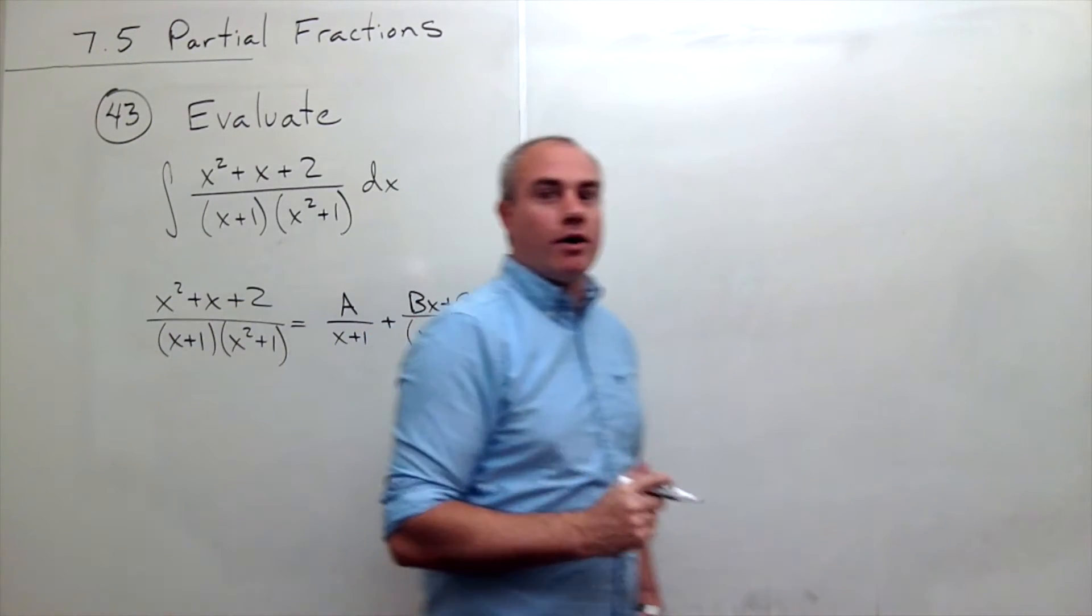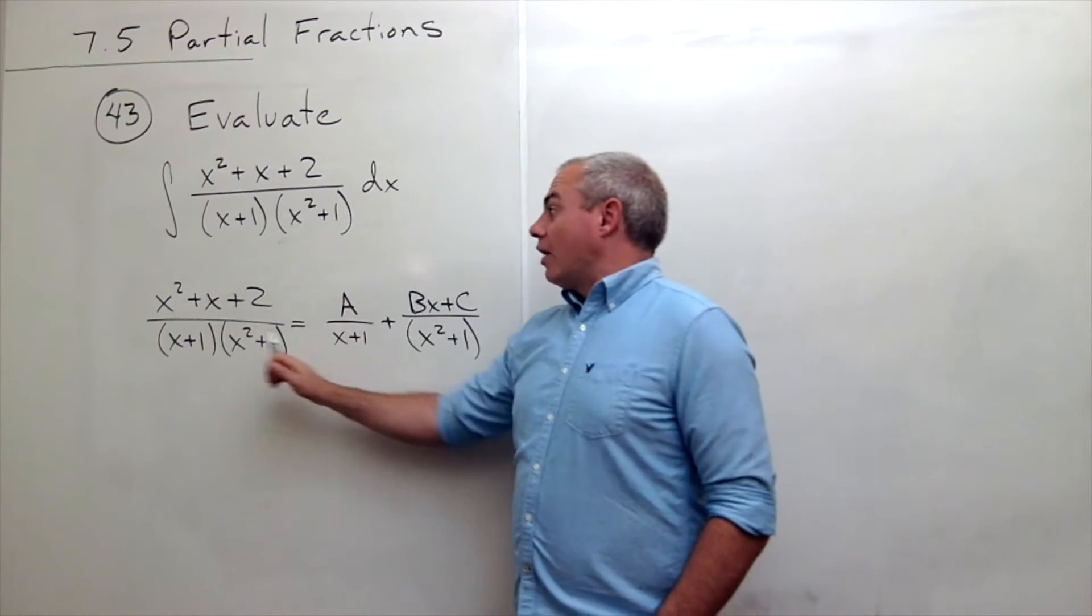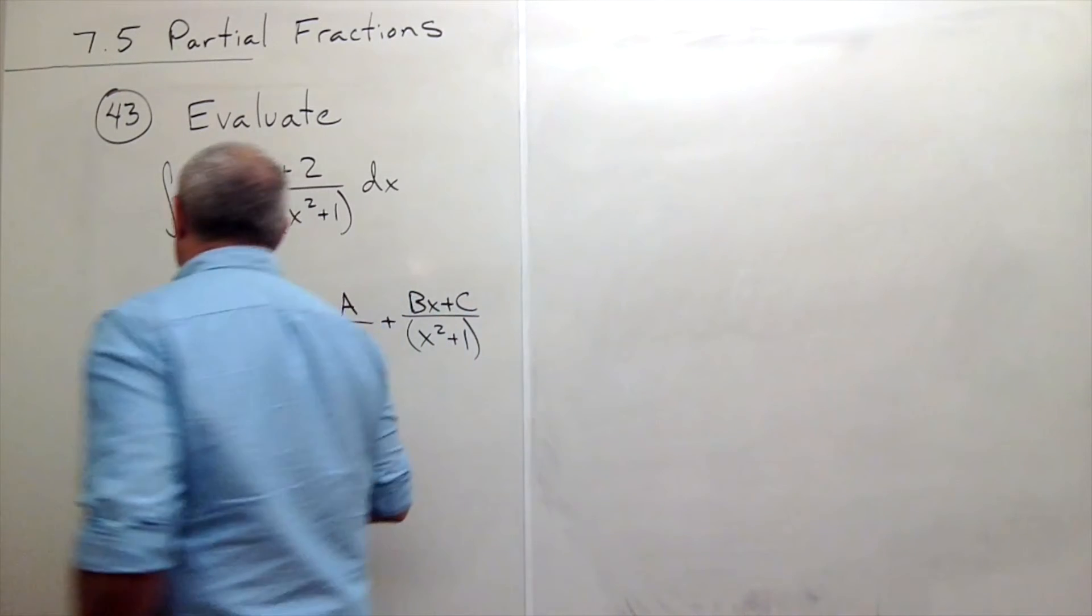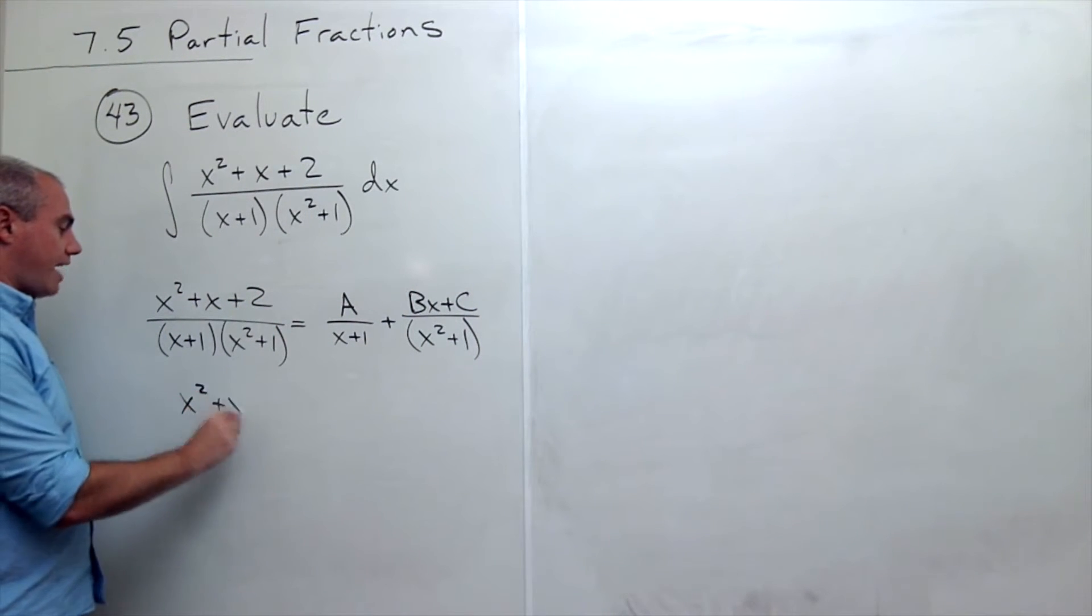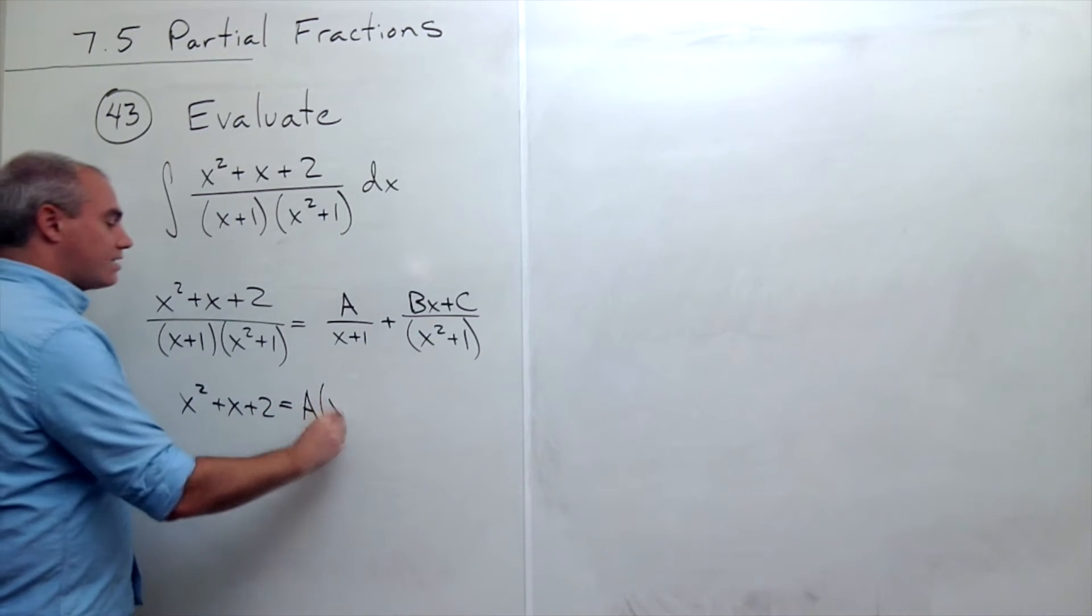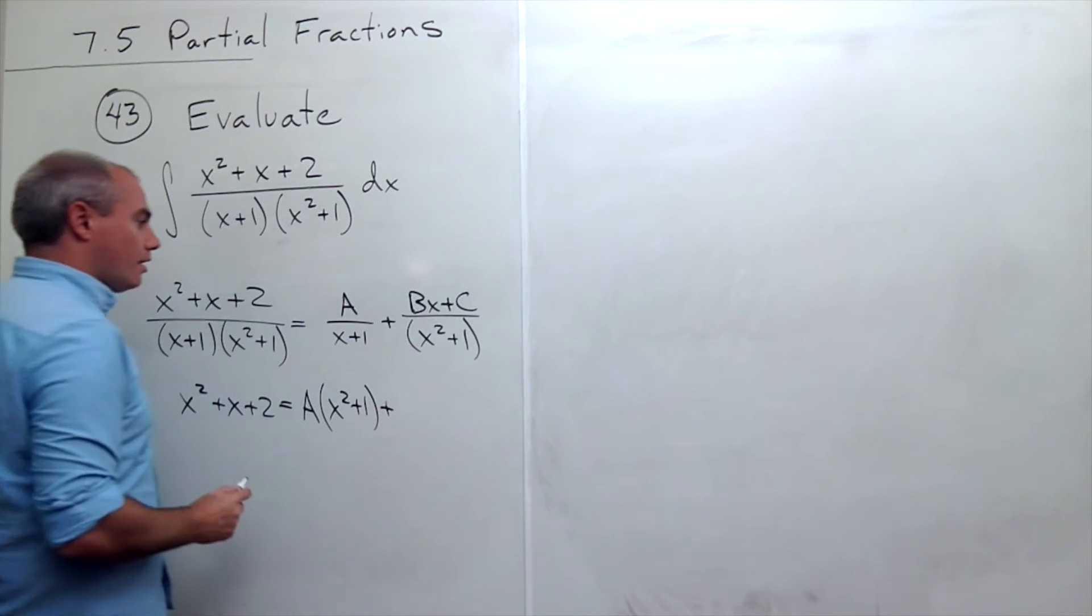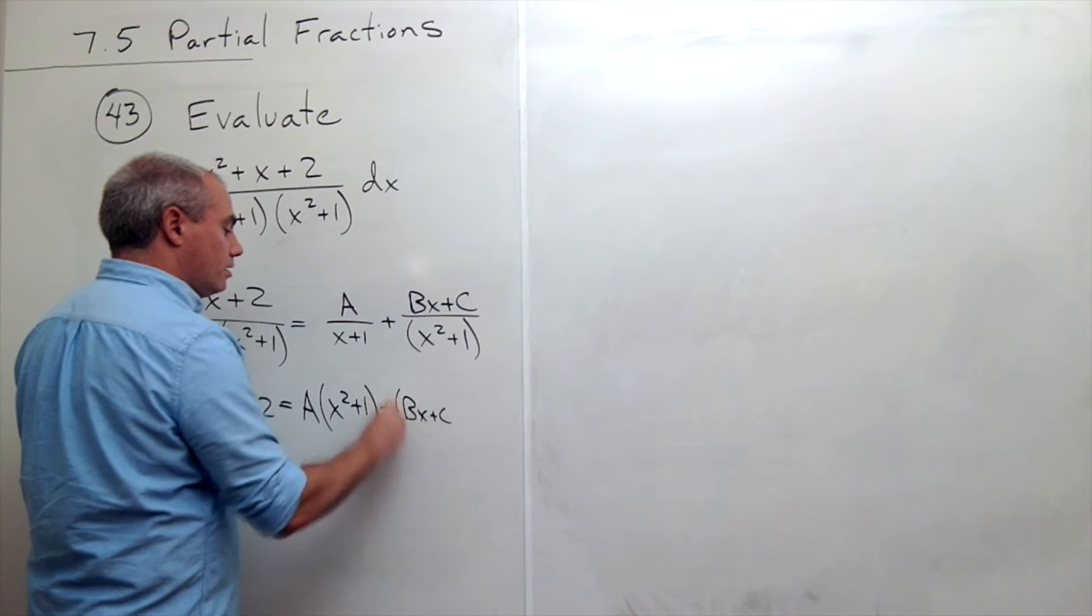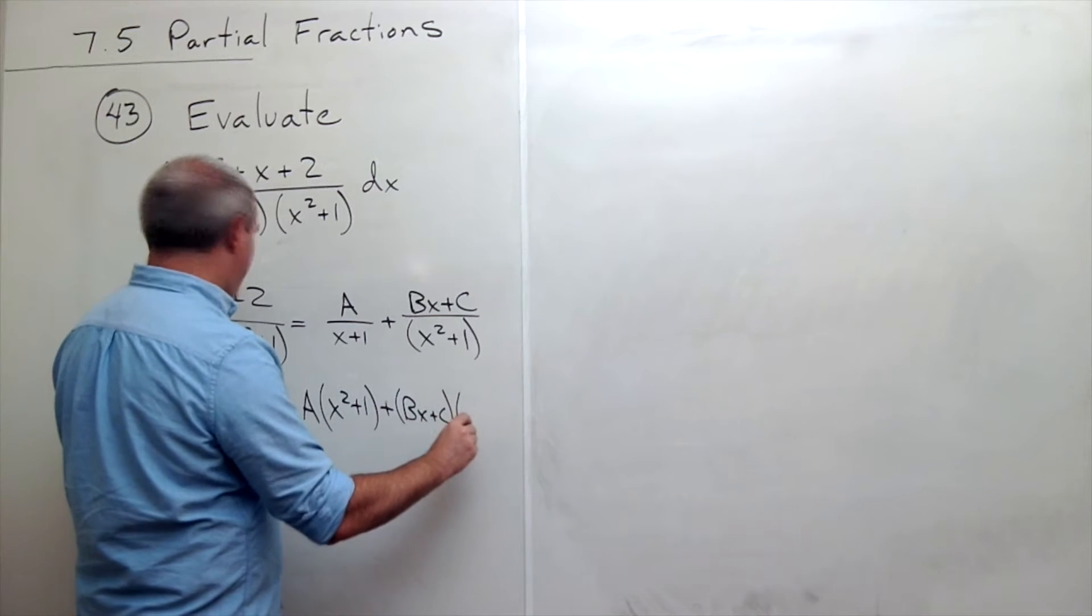And now we're ready to solve for the a, b, and c. Now let's clear the fractions out. If I clear out these fractions, what I get is x squared plus x plus 2 is equal to a times x squared plus 1 plus bx plus c times x plus 1.